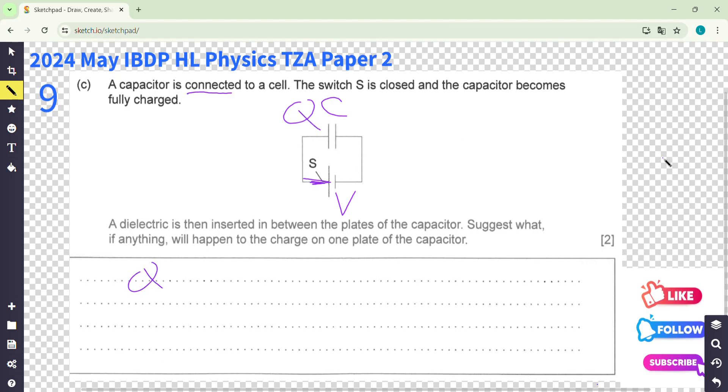And you know, Q equals CV. Now I keep it connecting, so V is a constant.